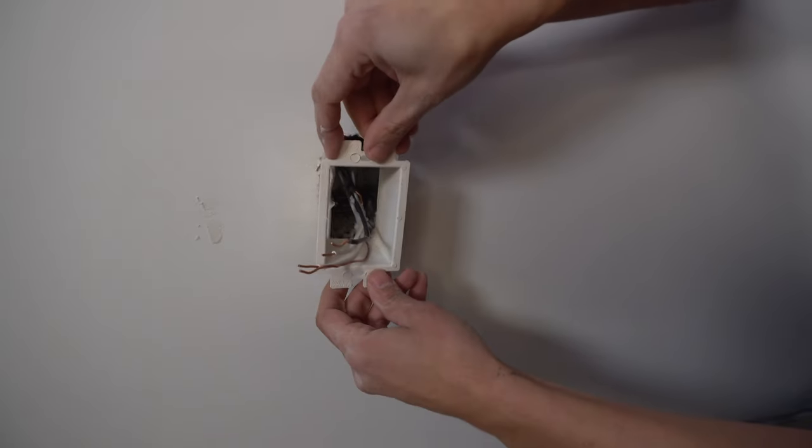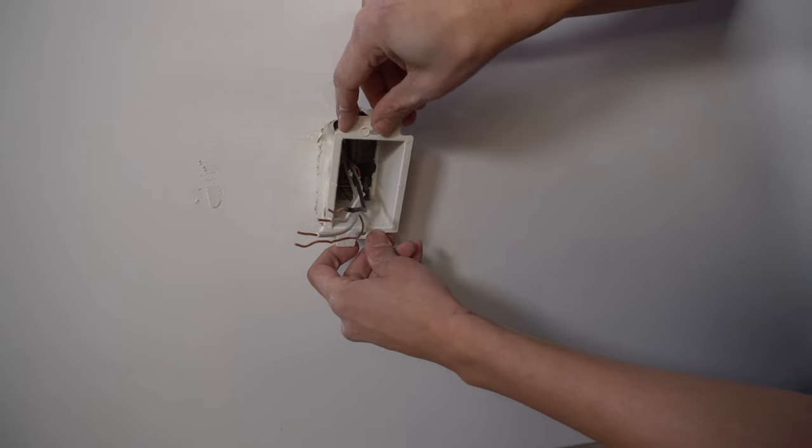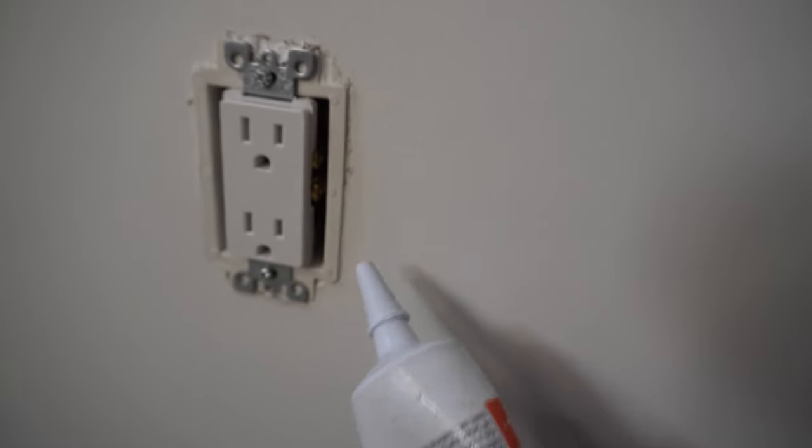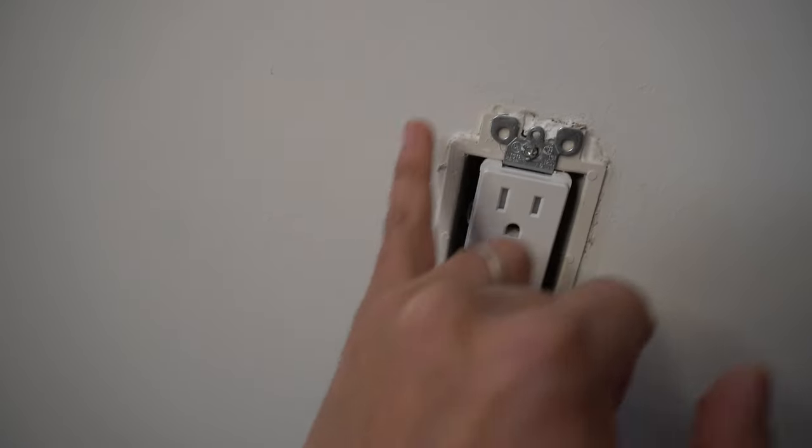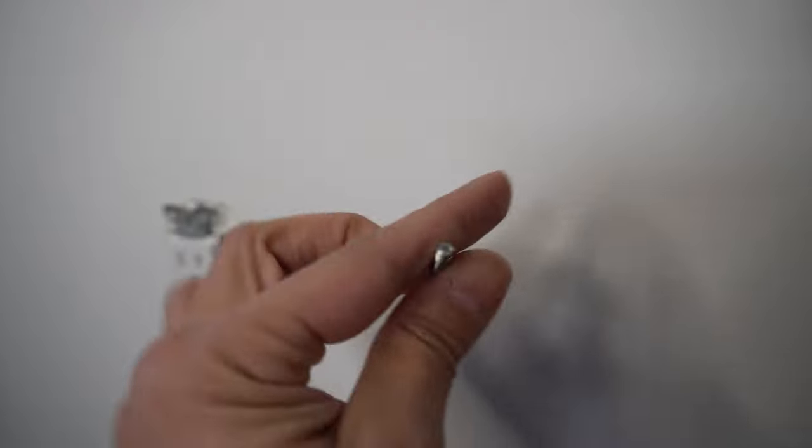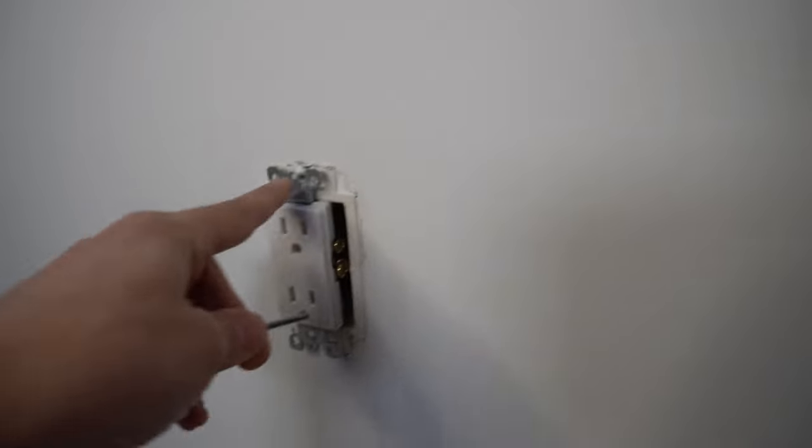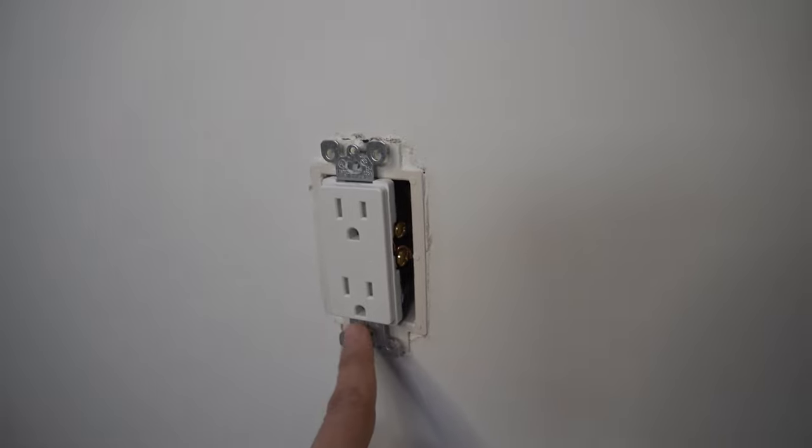The electrical receptacle here has a nice snug fit. I've filled in the gaps with some caulking here. It's going to prevent any drafts. I'm just going to be using here some extra long screws for the installation of our box extender and receptacle.